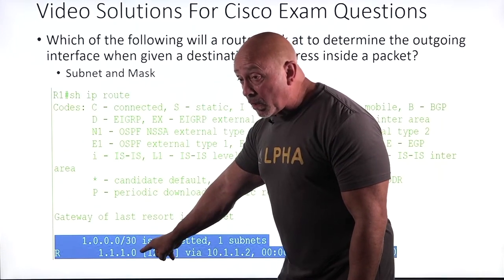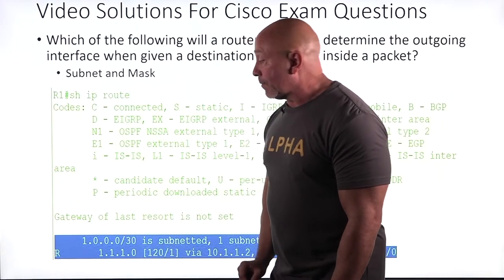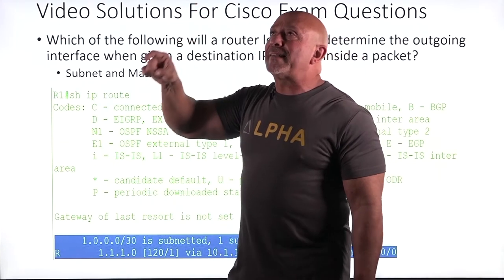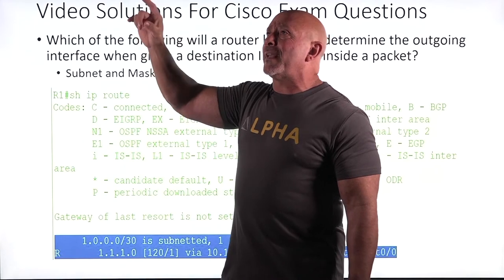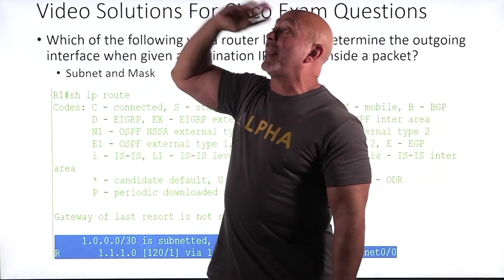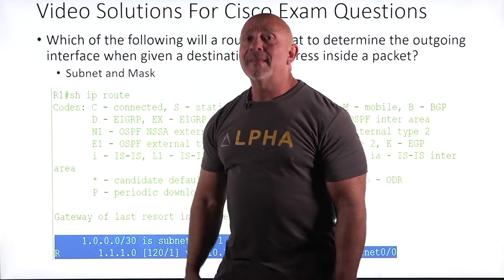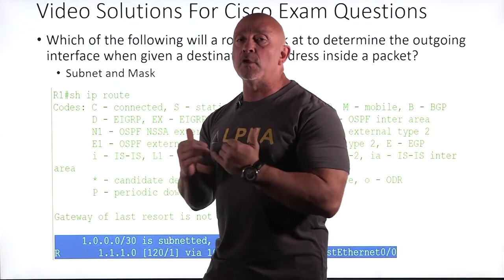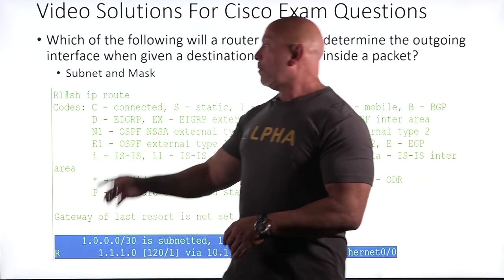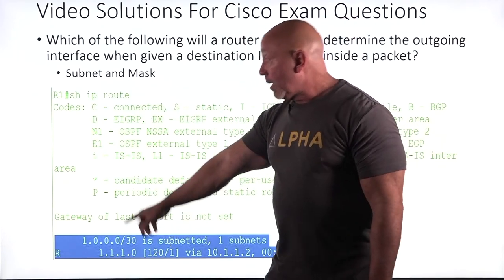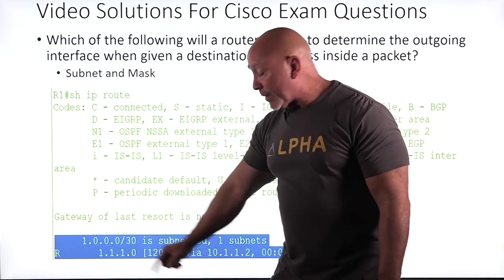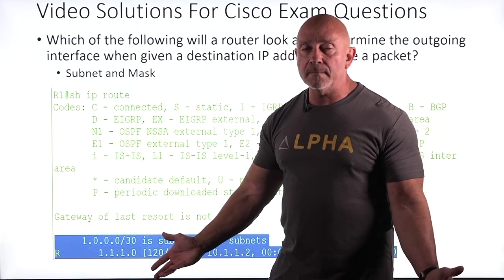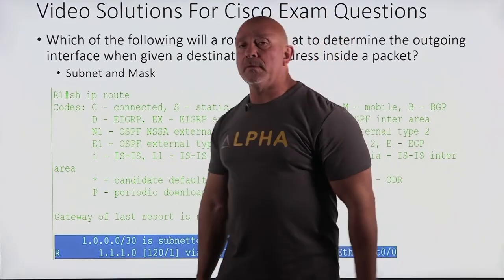Where do you want to go and what's the mask? The router says: I've got this — where is this network sitting? It's sitting on this interface, so I have to send out that way. That's how it knows which way to send your information — based on the subnet and the mask of that particular subnet, because you're going to have the IP address on that interface.